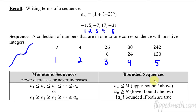Bounded is where you have a maximum on the upper bound or a minimum on the lower bound. The whole sequence a(n) is considered bounded if both of these are true — you've got a maximum value, a minimum value bounded below, and if it's bounded on top and bottom, then the whole thing is considered bounded.